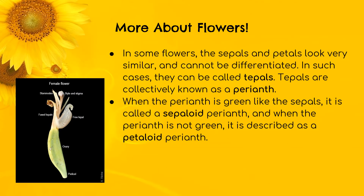In some flowers, the sepals and petals look very similar and cannot be differentiated. In such cases, they can be called tepals. Tepals are collectively known as a perianth. When the perianth is green like the sepals, it is called a sepaloid perianth, and when the perianth is not green, it is described as a petaloid perianth. In the given figure, these structures cannot be definitely called either a petal or a sepal, hence they are called tepals.